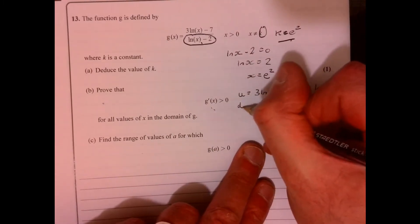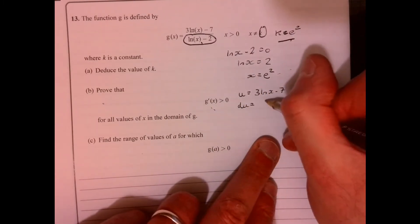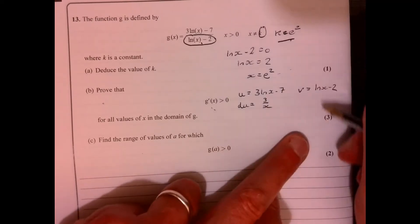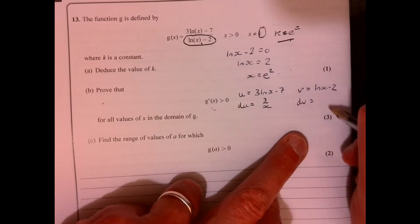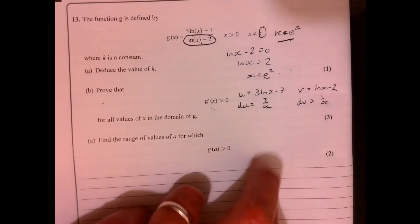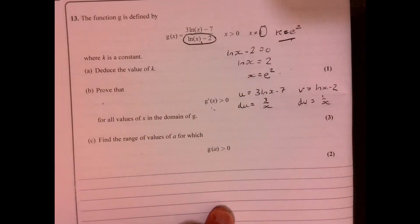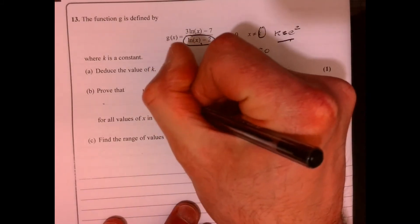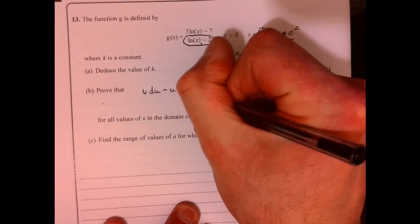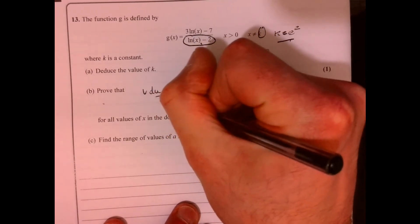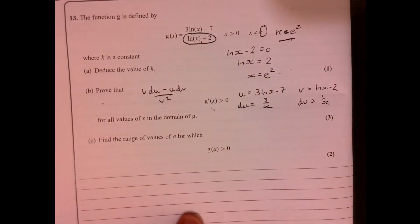Now, when you differentiate this, it does actually look a little bit scary for a minute. So du is just going to be 3 over x. dv, that would just be 1 over x. Now, if we just piece all that together. So quotient rule is v du minus u dv over v squared.